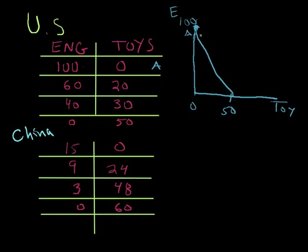That's what the United States could produce. It cannot produce out here. It can only produce somewhere along this line, 100-0, 60-20, 40-30, etc.